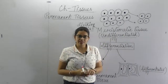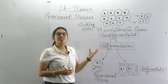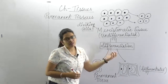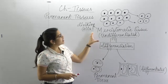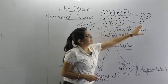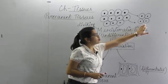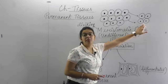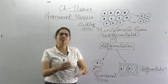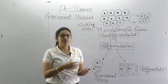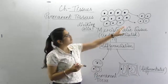A question can come to mind: ma'am said that meristematic tissues will divide, but when they divide, what kind of cells will be formed — same or different? So the answer is: when meristematic tissue cells divide, some new cells are formed. Some of those cells remain as meristematic cells only — they will keep on dividing, grow, mature, and then divide again. That remains their function.